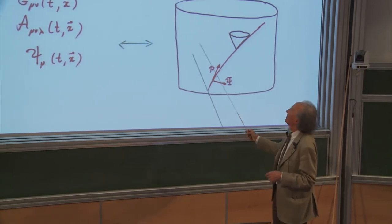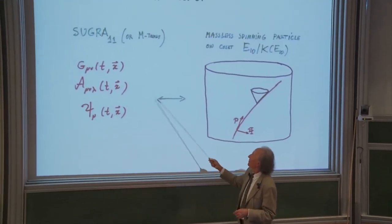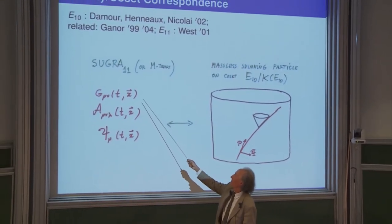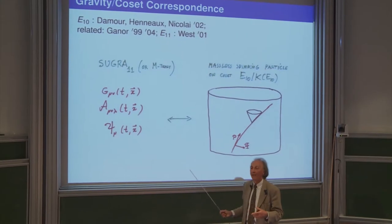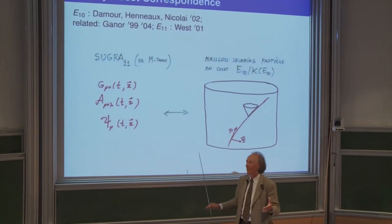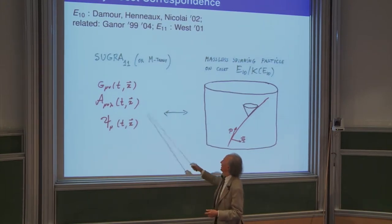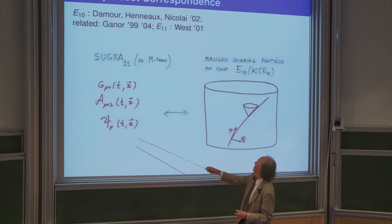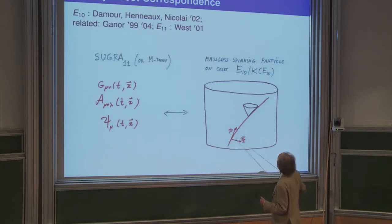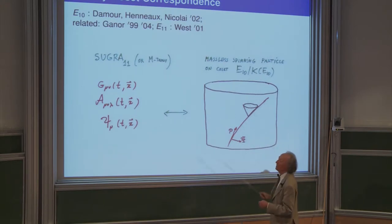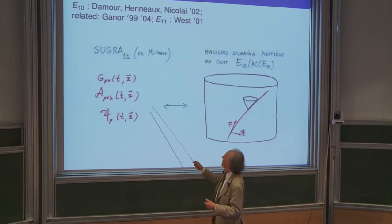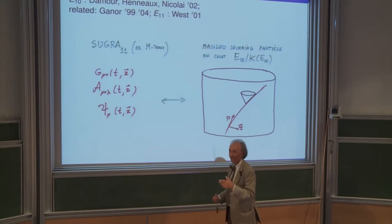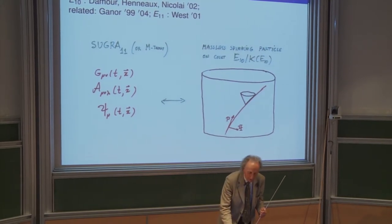In picture form: on one side you have an 11-dimensional theory with zero-mode fields — gravity, the four-form, and all the extended quantum objects associated with M-theory. The idea is that the quantum dynamics of this system would be equivalent to the quantum motion of a massless particle with spin degrees of freedom on an infinite-dimensional space E10 divided by its maximally compact subspace. So here you have a theory in 11 dimensions, and there you have a particle moving with one parameter — but you quantize it.